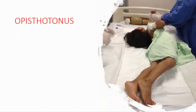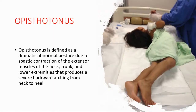Opisthotonus is defined as a dramatic abnormal posture due to spastic contraction of the extensor muscles of the neck, trunk, and lower extremities that produces severe backward arching from neck to heel.